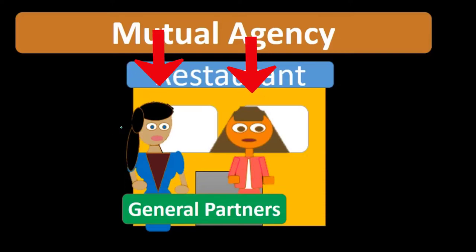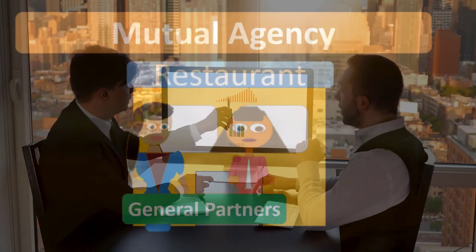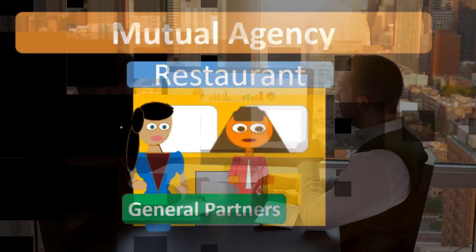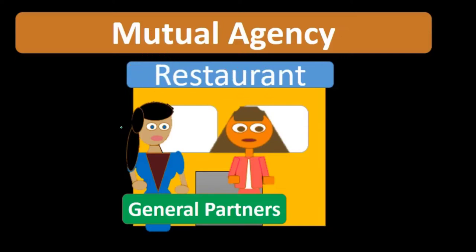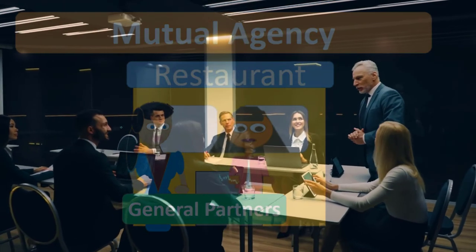Either partner can make decisions about the joint assets placed into the partnership, as well as obligating future assets by creating liabilities through contracts. This is an important point when thinking about partnership agreements, because either partner can make contracts that obligate the partnership — and in doing so, they put the other partner on the line as well.